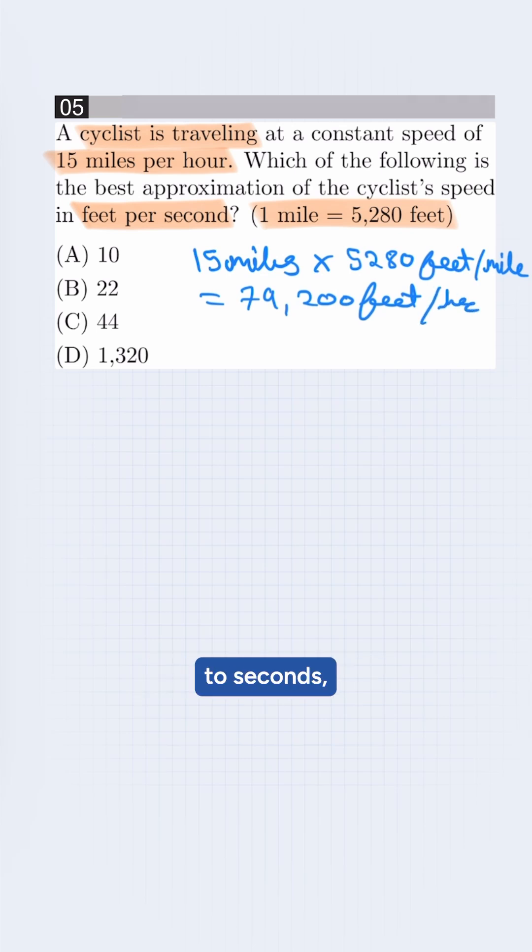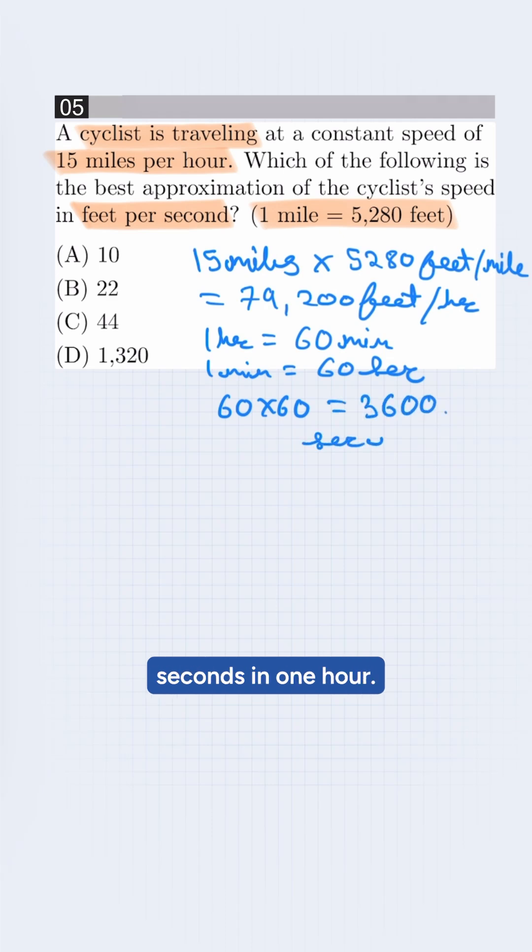To convert to seconds, there is one hour which has 60 minutes and one minute has 60 seconds. So we multiply 60 times 60. It will be 3,600 seconds in one hour.